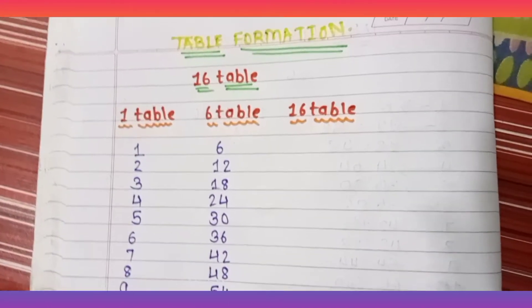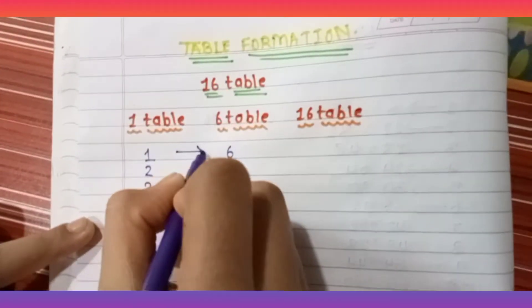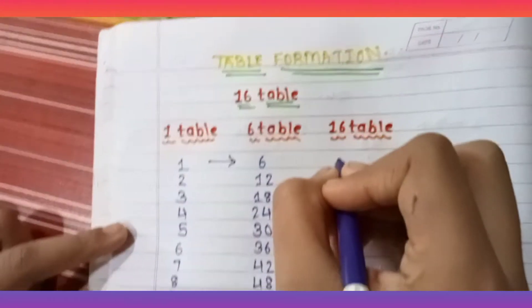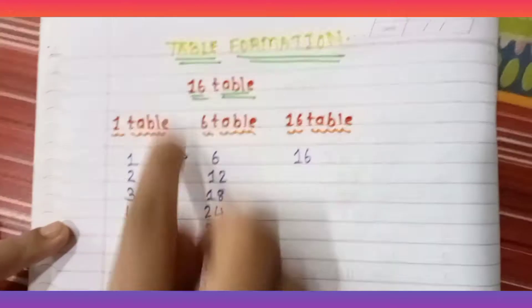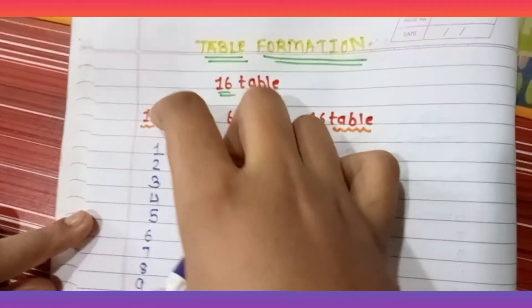I have made 3 rows and you have to write like this: you have to write the 1 table, then the 6 table, and then the 16 table.